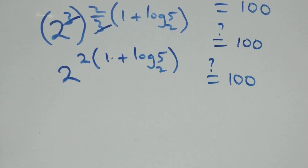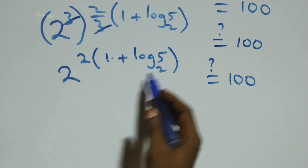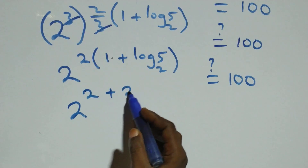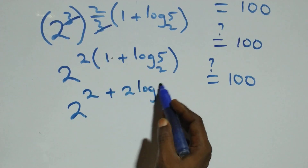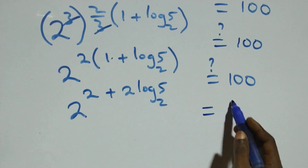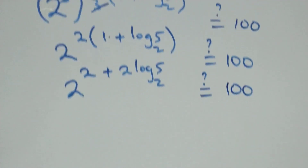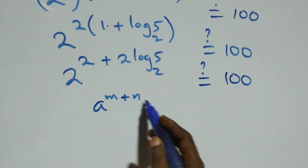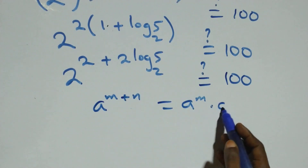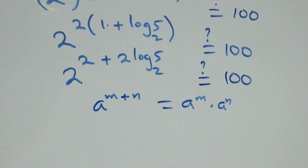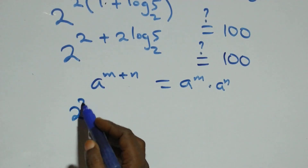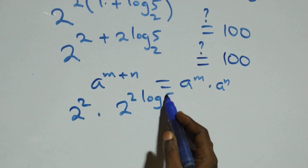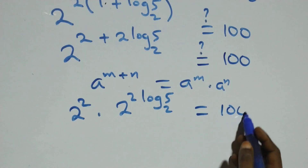This power opens the brackets, and we have 2 raised to power (2 plus 2 log₂ 5) equals one hundred. Following the law of indices, a raised to power (m plus n) equals a raised to power m times a raised to power n. This becomes 2 raised to power 2, times 2 raised to power 2 log₂ 5, equals one hundred.